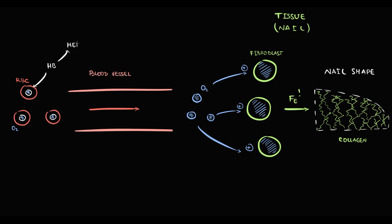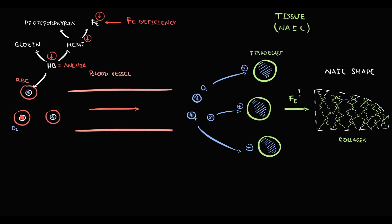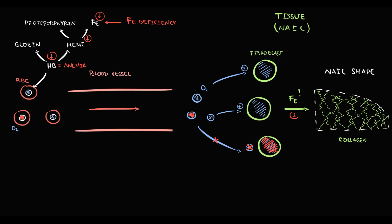Recall that hemoglobin is composed of heme and globin, and heme is iron in complex with protoporphyrin. In iron deficiency, first of all we have less iron for hemoglobin production. Decreasing hemoglobin level we call anemia, and with anemia we have less hemoglobin to carry oxygen, so the delivery of oxygen to the tissues decreases. This is critical because fibroblasts require oxygen for their function, and with decreased oxygen delivery, fibroblasts begin to produce less collagen. In addition, iron deficiency affects collagen production directly, because iron is a cofactor for collagen production.